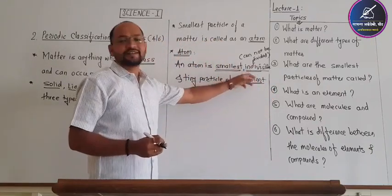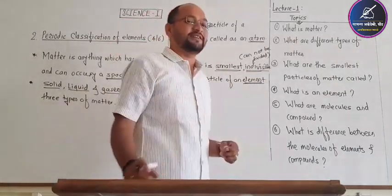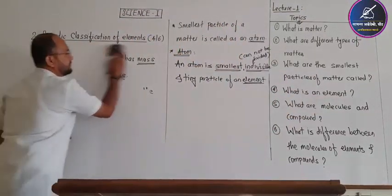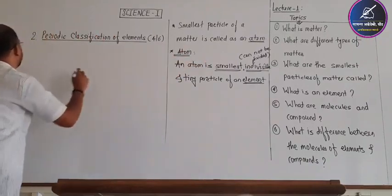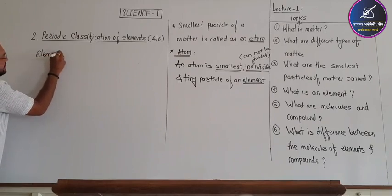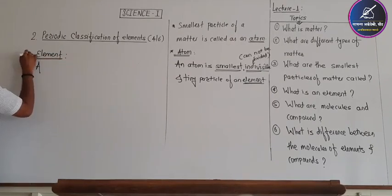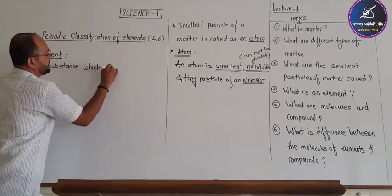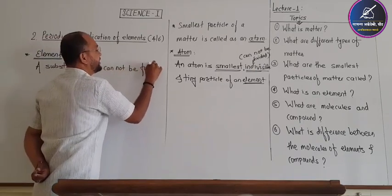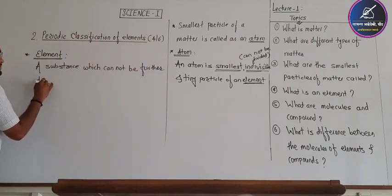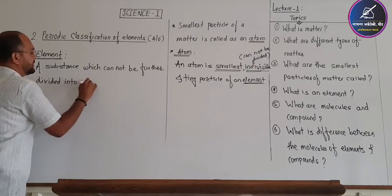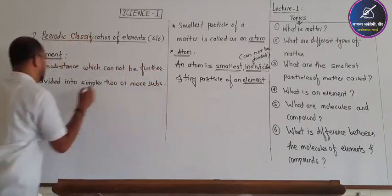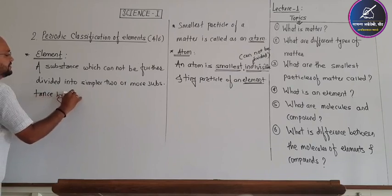An atom is the smallest, indivisible, and tiny particle of an element. An element is a substance which cannot be further divided into similar two or more substances by any physical or chemical process.